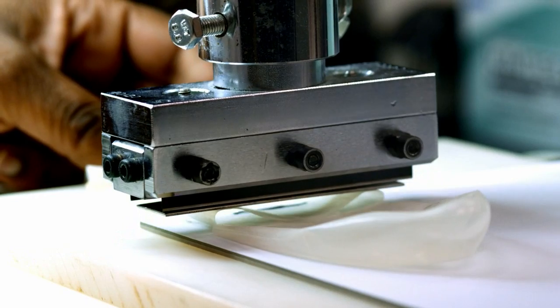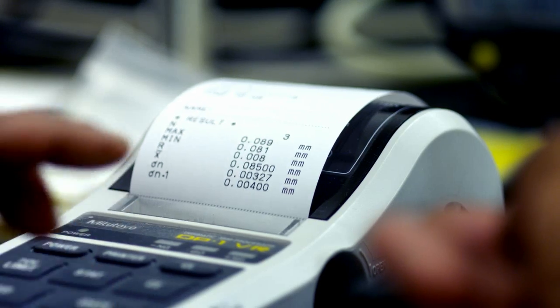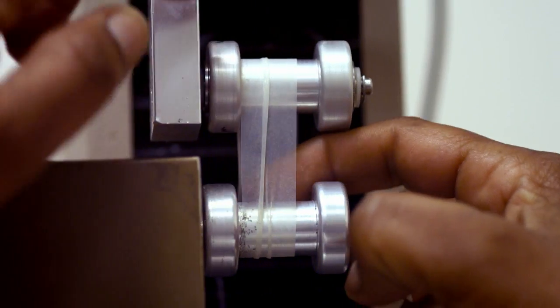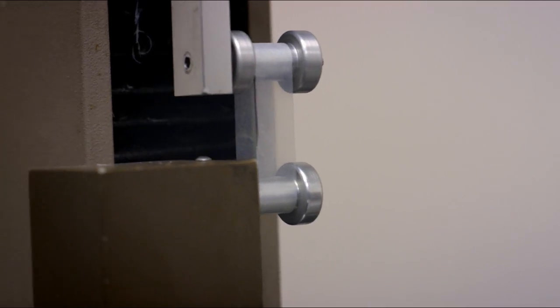This next test here, which we call the tensile test, stretches out the width of the condom to see how far it can enlarge and how strong it is. Most condoms stretch to over 750% of their original width.